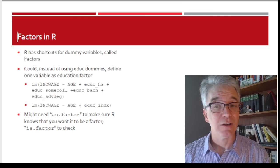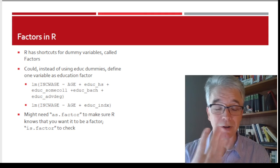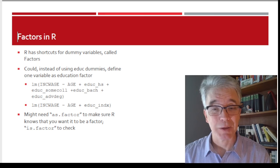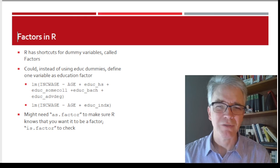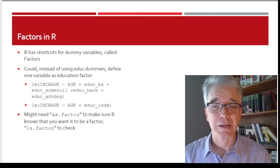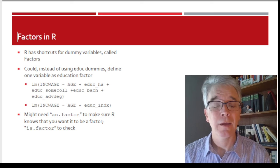Now, again, you want to be careful. You want to make sure R knows that that is a factor. Because if it doesn't, it'll just say, okay, this variable goes from one to five, and I'll just treat it like age or something. But, again, that's generally not the right way to do it, because that implies the increase, right? As my factor goes from one to two, that's going to be the same change as when my factor goes from four to five. And we generally have no possible economic rationale to think that that sort of linearity assumption is going to be true.